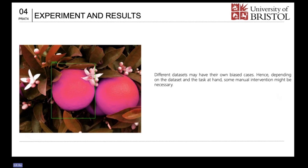For the fruit dataset, color is indeed a significant distinguishing feature. Color changes can lead to the original labels not being retained after transformation. Different datasets may have their own bias cases. Hence, depending on the dataset and the task at hand, some manual intervention might be necessary.